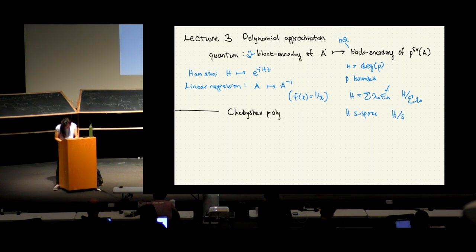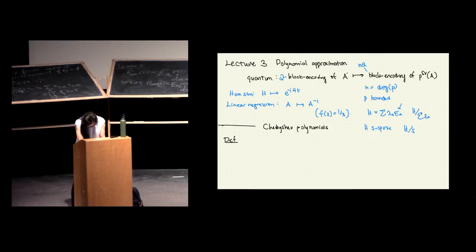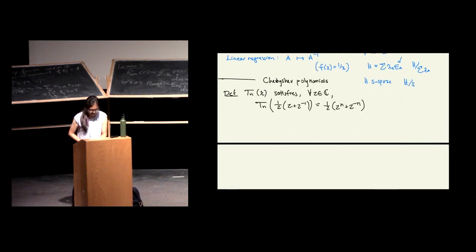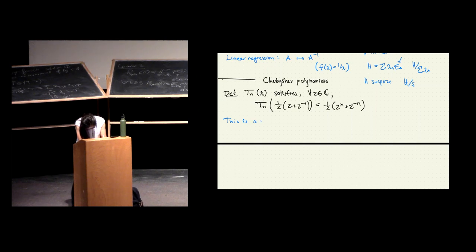So I'm going to give a bunch of theory of Chebyshev polynomials. The way I'm going to define them is that the degree-n Chebyshev polynomial, called T_n, is the function that satisfies for a complex z the equation T_n(z) = (1/2)(z^n + z^{-n}). From this definition, you might ask: why is this a polynomial? Well, you can see that this is a polynomial by observing that it satisfies a recurrence relation.